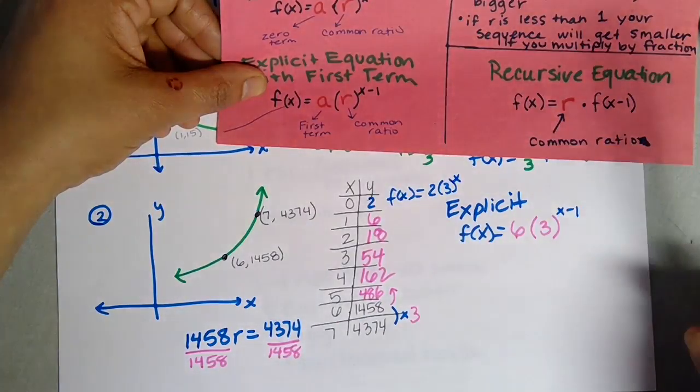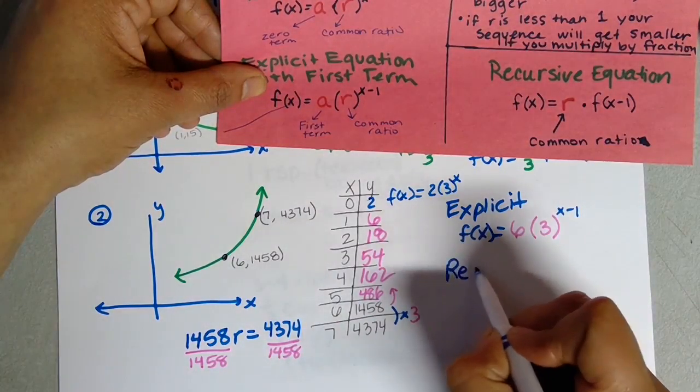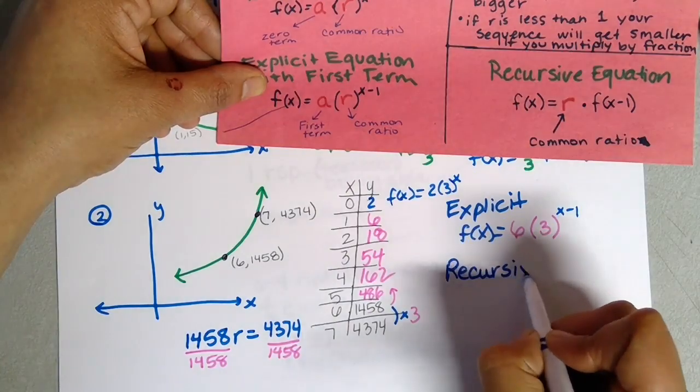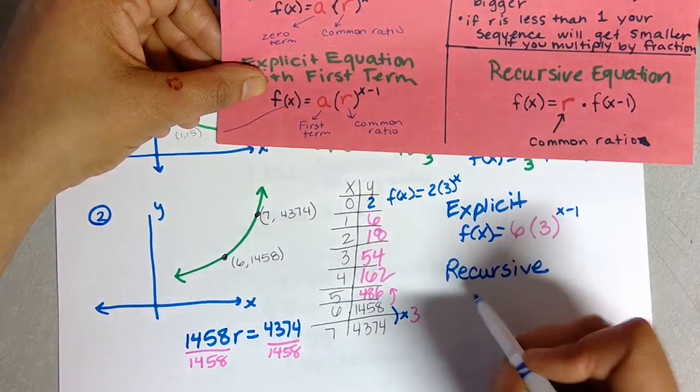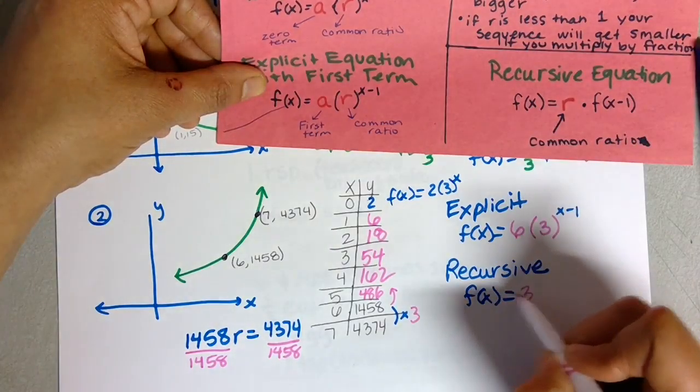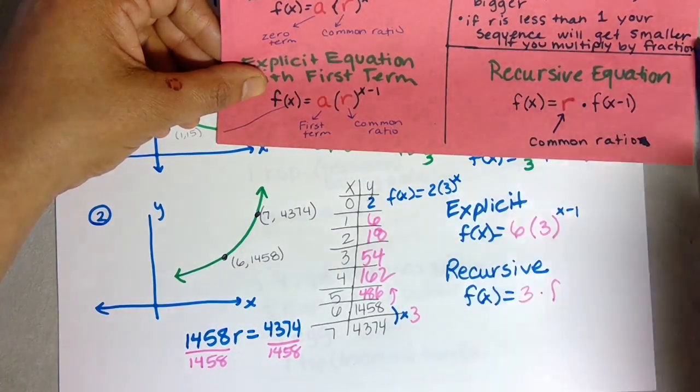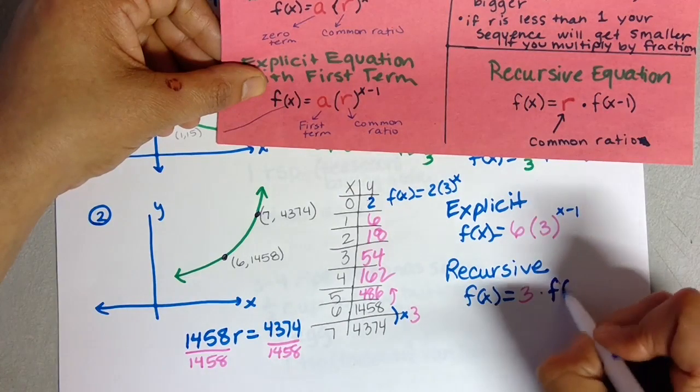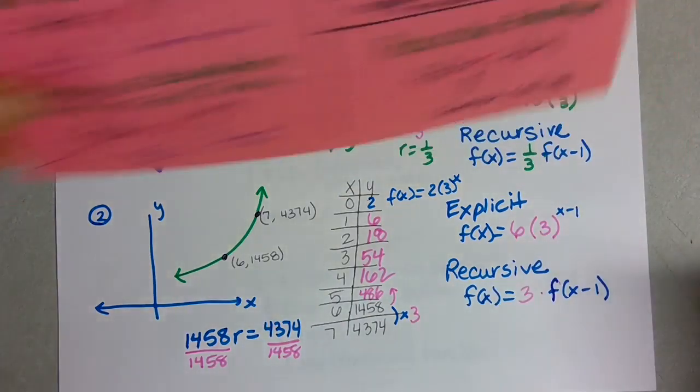Either that equation or this one. The recursive equation is a lot easier—it's just telling you how it's growing. f(x) equals—it's growing by 3 every time—so 3 times that previous term. And that's it.